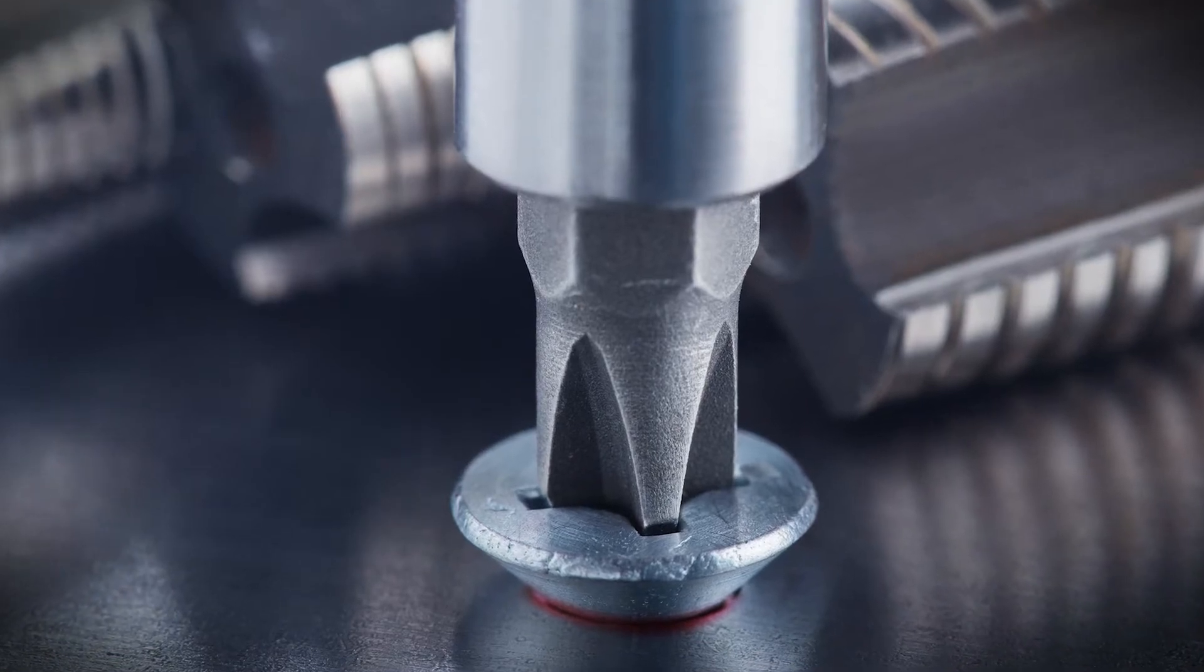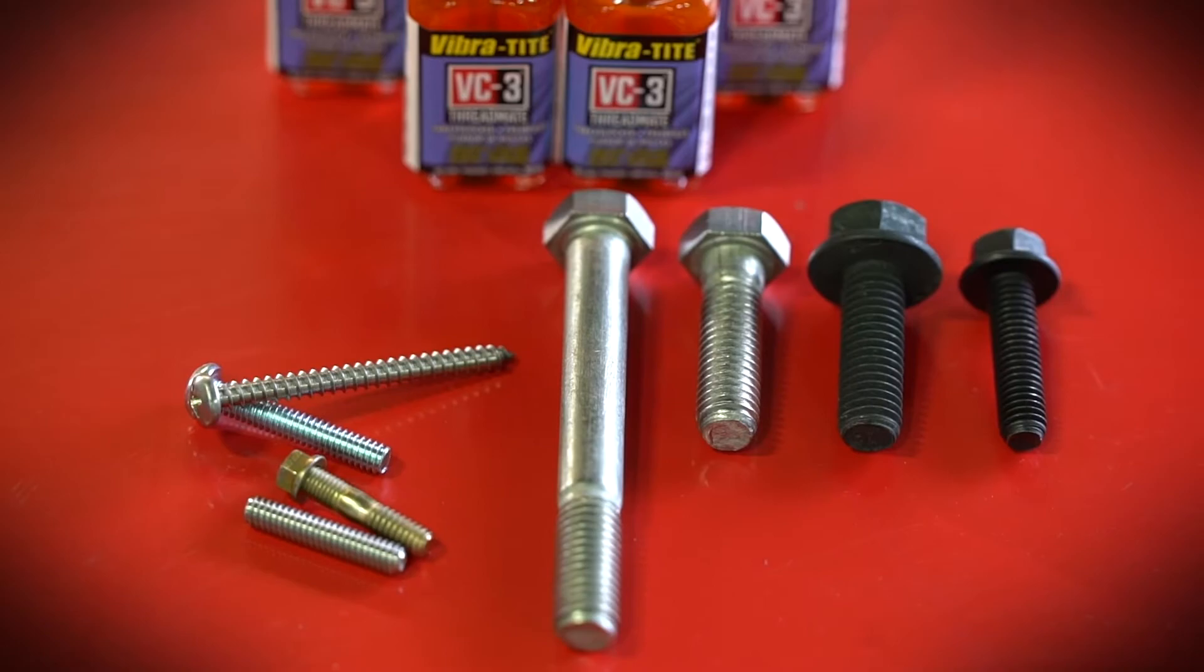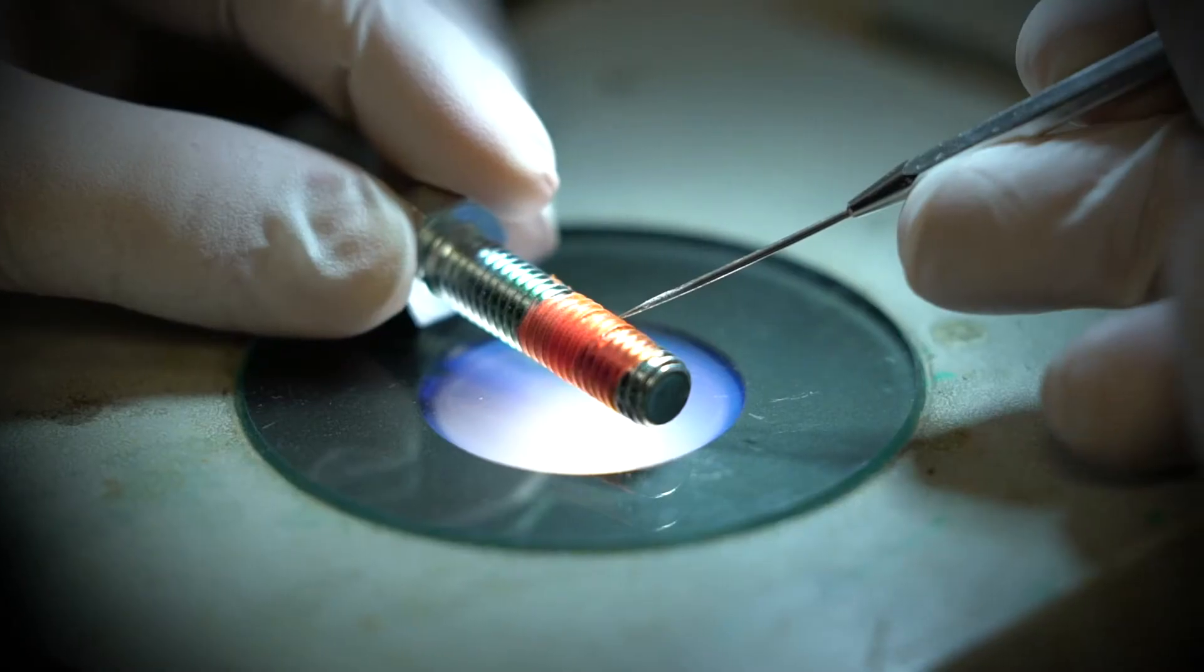VC3 can be used with metal, wood, or plastic on any fasteners of all sizes, from small eyeglass screws to large bolts.